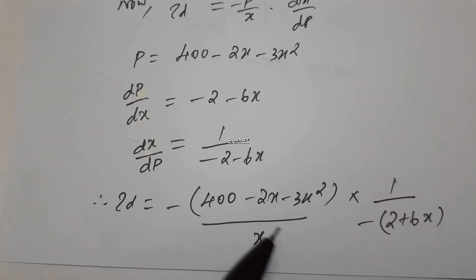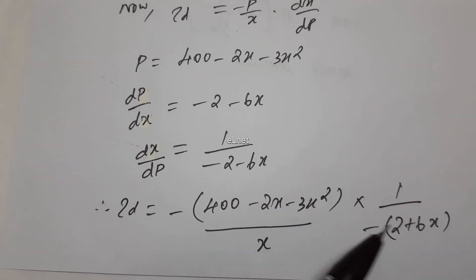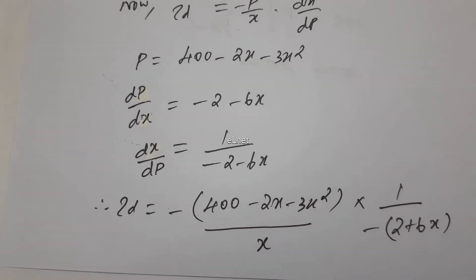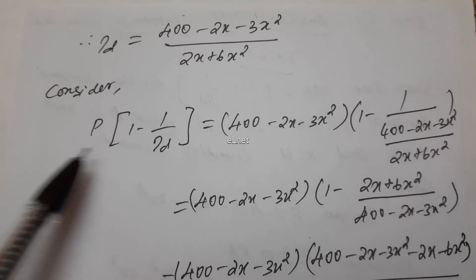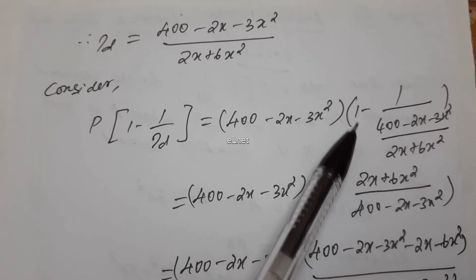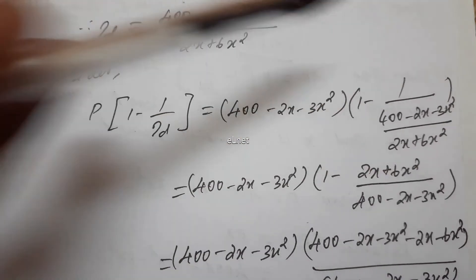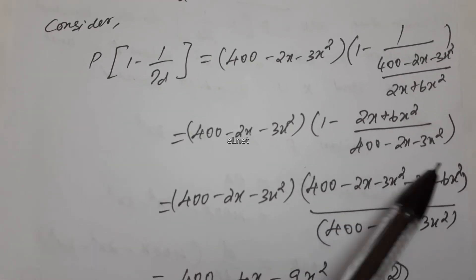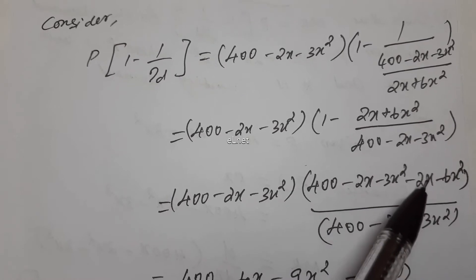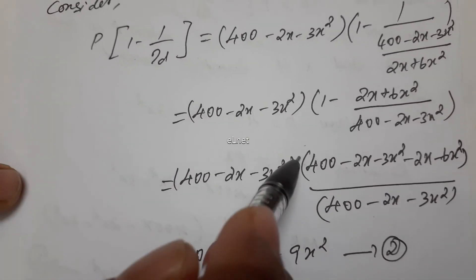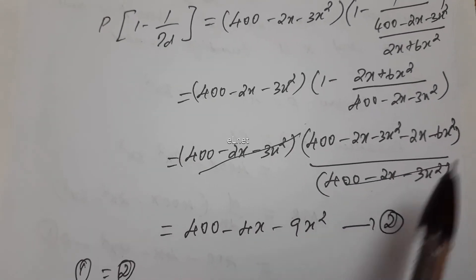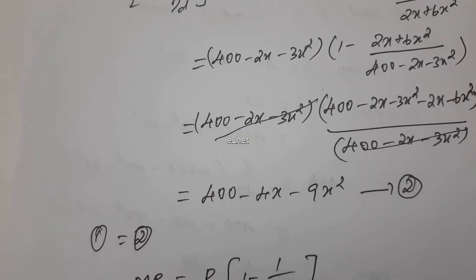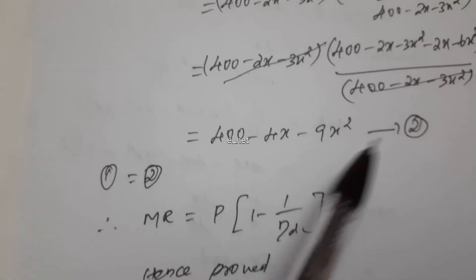Therefore, eta D is equal to minus P by x into dx by dP. So, P times 1 minus 1 by eta D, substituting the reciprocal and multiplying: minus 400 minus 2x minus 3x squared times the fraction. The first term cancels, so remaining is 400 minus 2x minus 2x, so minus 4x, minus 3x squared minus 6x squared, so minus 9x squared. This is equation 2.